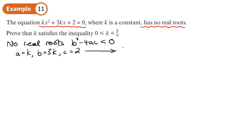So b squared minus 4 times a times c must be less than 0. That's 9k squared minus 8k is less than 0. Let's factorize it because we'll need the critical values. That's k in brackets 9k minus 8 is less than 0. This gives us k equals 0 as one critical value.